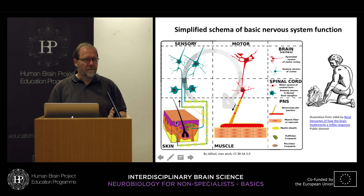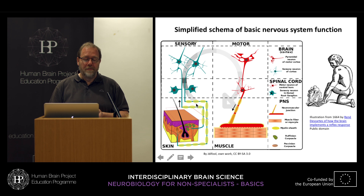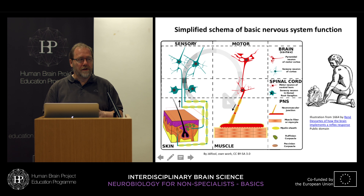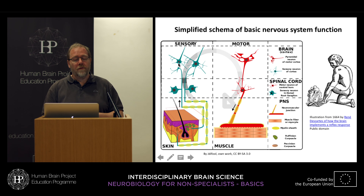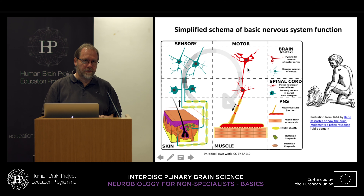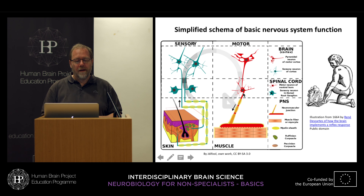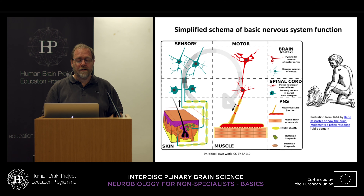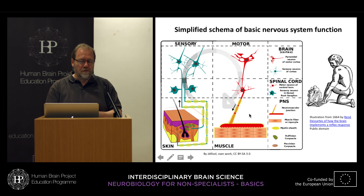In a more modern view, on the skin we get the perception — of heat, of touch, whatsoever. This would be sent to the spinal cord, to the dorsal horn where we have sensory neurons. From there it goes to the brain, where sensory regions signal to motor regions. These motor regions send information to the spinal cord again, where we have motor neurons in the ventral horn, which innervate muscles and introduce muscle contraction.